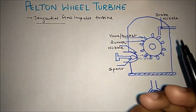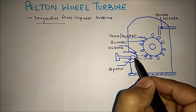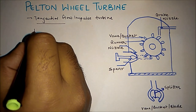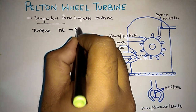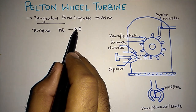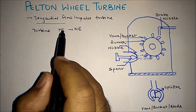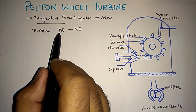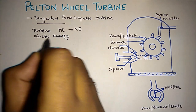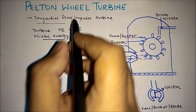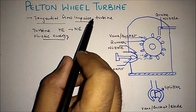Now why we say it is impulse turbine? Impulse turbine means the inlet hydraulic energy is in the form of kinetic energy. A turbine is a device that converts hydraulic energy to mechanical energy. Hydraulic energy is defined as energy that is associated with water or fluid. The inlet energy is only in the form of kinetic energy — that is why it is known as impulse turbine. I hope you understand why it is tangential flow and impulse turbine.